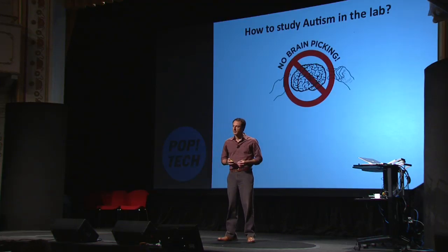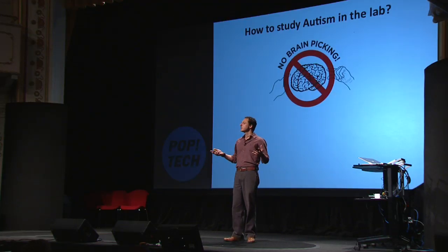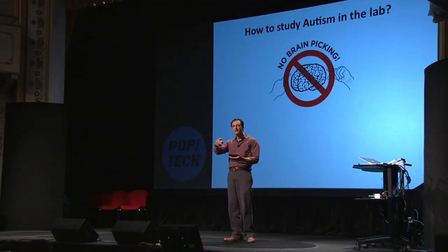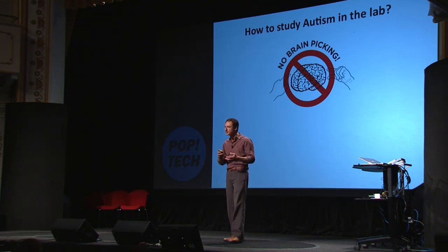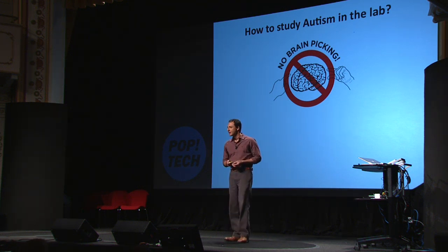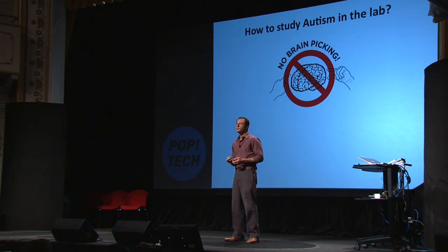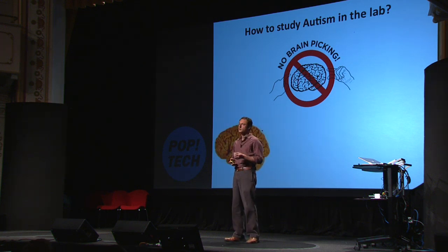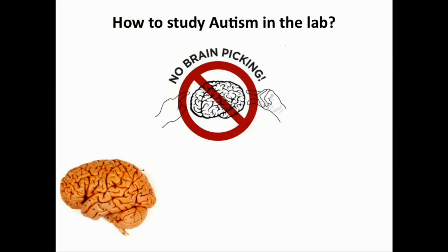We would like to have some volunteers so we can open the skull and look for brain cells and start studying the brain, but that's not the case. So we rely on post-mortem brain tissues, but these are really hard to get, and even worse, they represent the end stage of the disease.